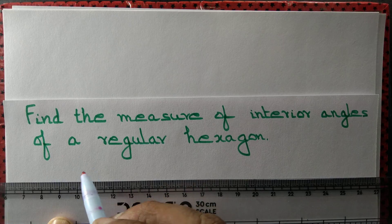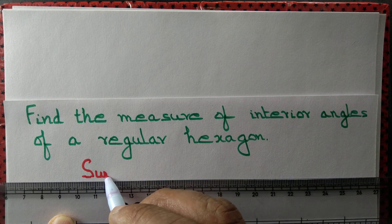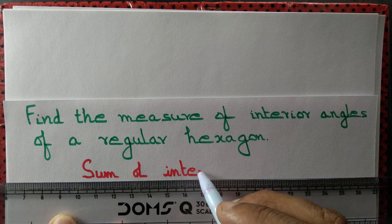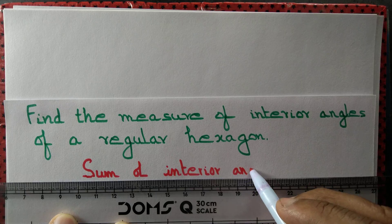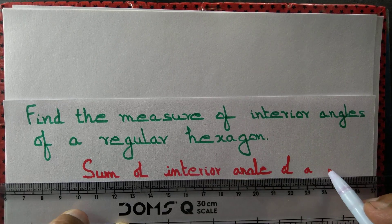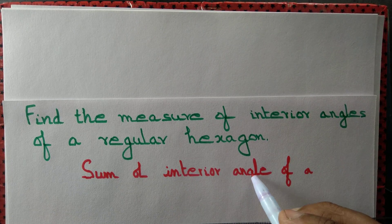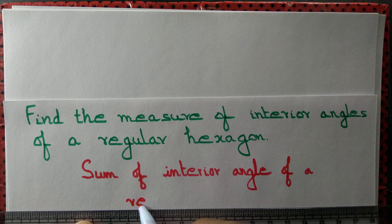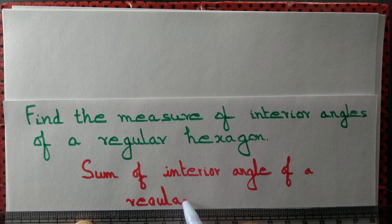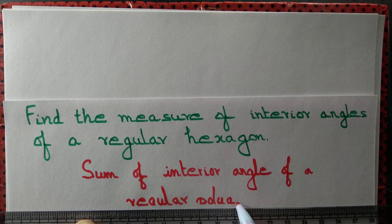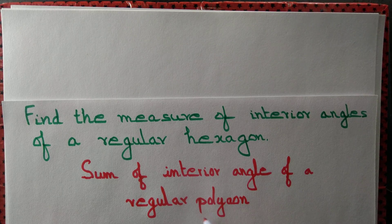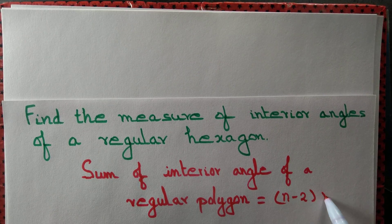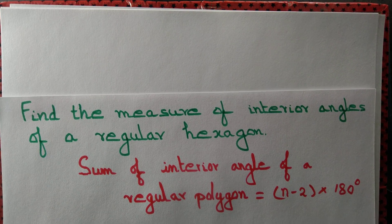We know that the sum of interior angles of a regular polygon equals (n-2) × 180 degrees, where n denotes the number of sides.